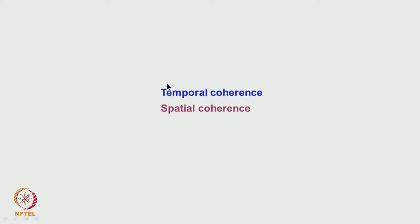Two types of coherence which we have to consider: one is called temporal coherence and the other is called spatial coherence. We will discuss the difference between these two and their significance in electron microscopy.